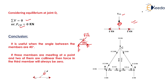A complete force diagram is shown on screen. In members AD and BD, there is a tensile force of 5 kN each. In members BC and AC, there is a compressive force of 5√2 kN. The force in member CD equals 0. We have now determined the forces in each member of the truss. Thank you very much, students.